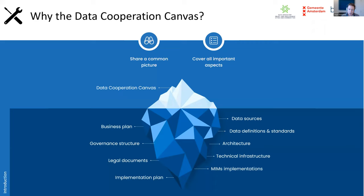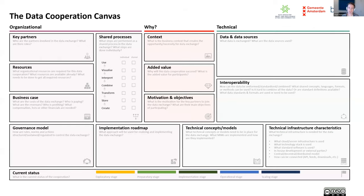It's a very helpful tool for both internal and external stakeholders to have a shared common picture about the data cooperation canvas and to make sure it's covering all the aspects. Especially for exploring new data cooperations, the latter part of covering all important aspects is very helpful. So if you're thinking about setting up a data cooperation, you can be sure you're covering all the different aspects. Let me show you how the data cooperation canvas looks.